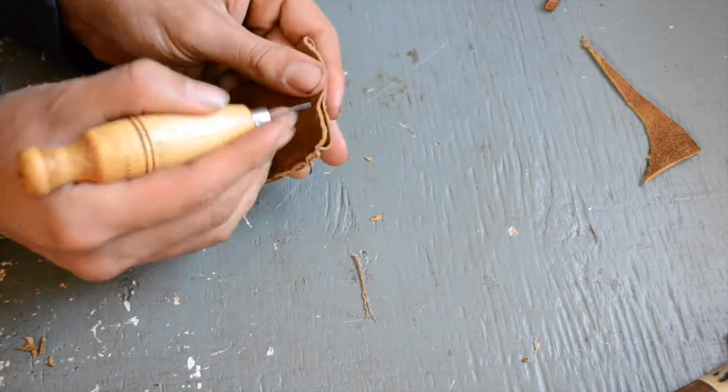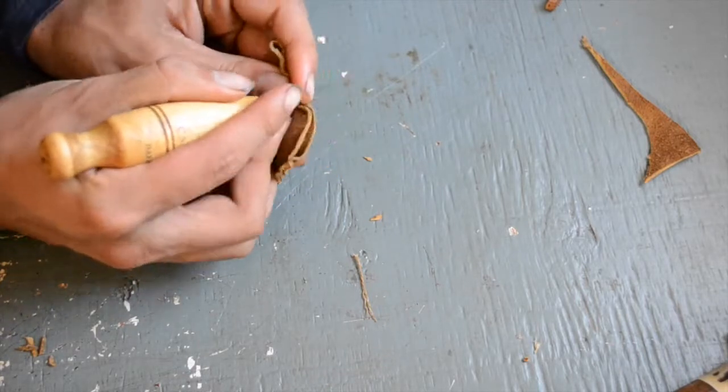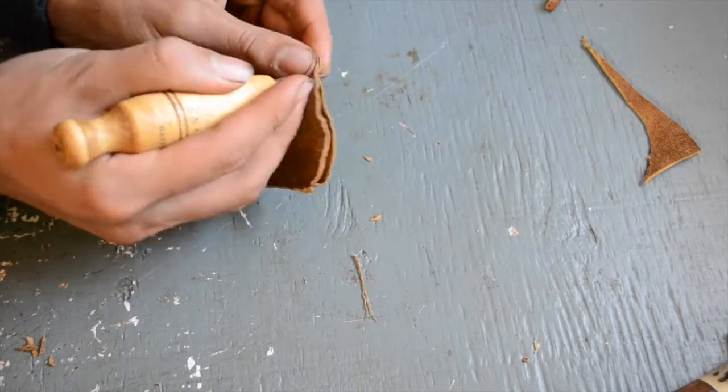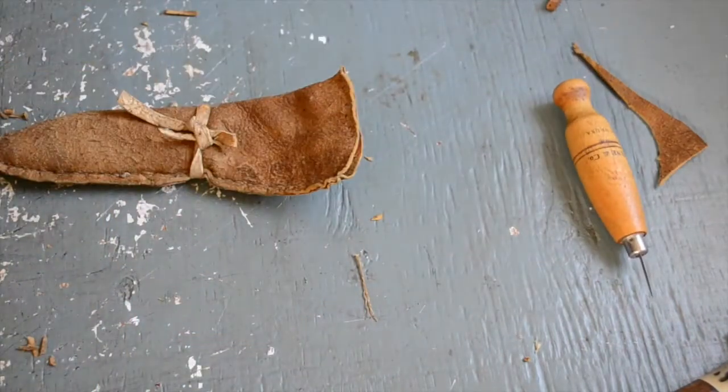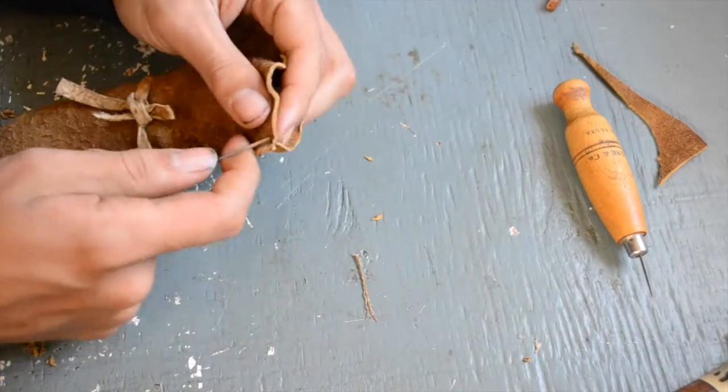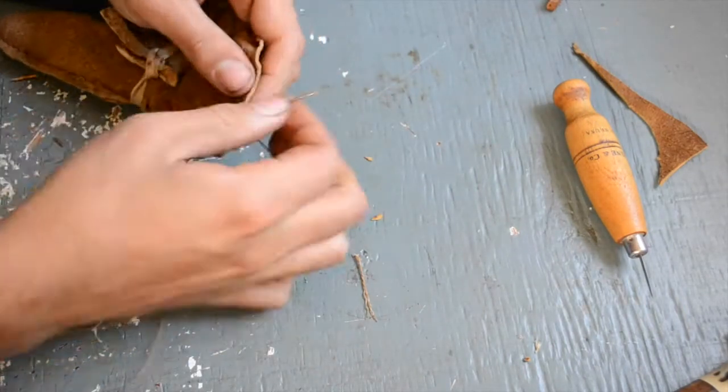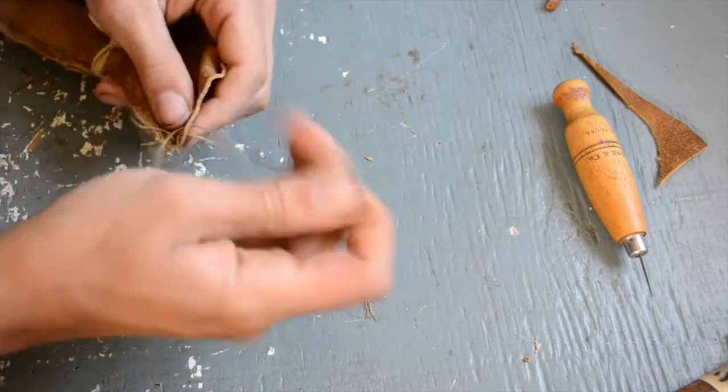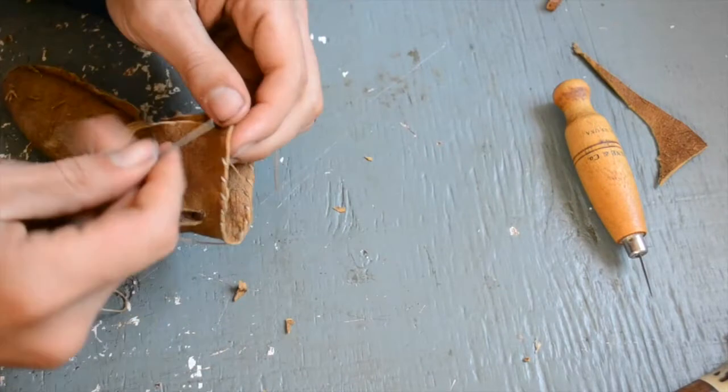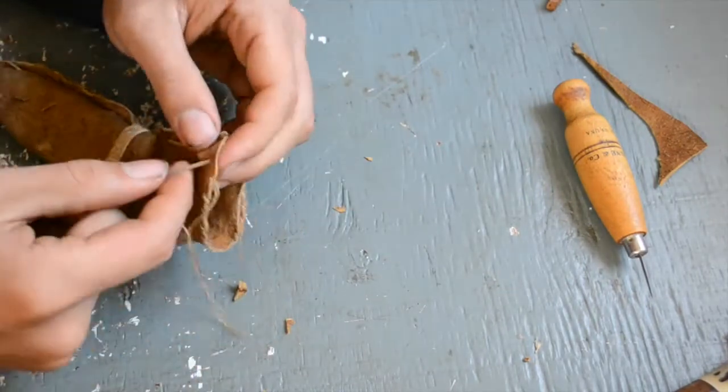The scabbard is still looking kind of plain, so I'm going to add a bit of stitching near the top. This is just decoration, so it doesn't matter if the spacing isn't perfect. Then I'm just going to whip the edges. This will make the edges a little bit more durable, but mostly I'm just doing it for looks.